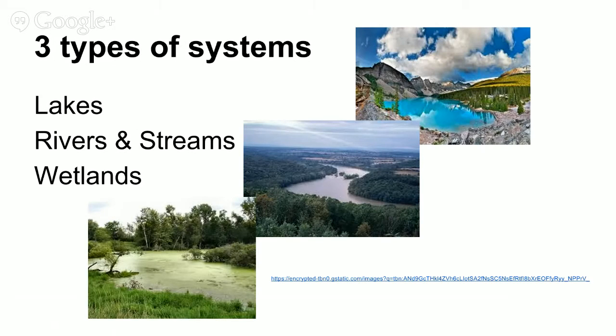There are three types of systems as we mentioned already: we have lakes, we have rivers and streams, and then wetlands.